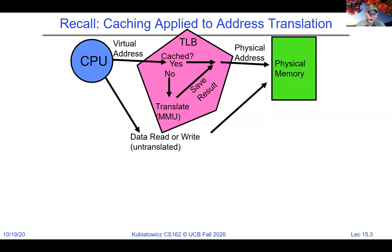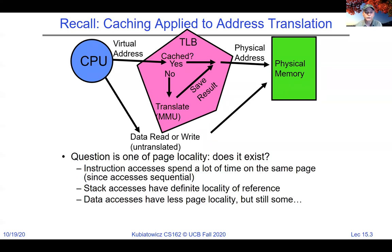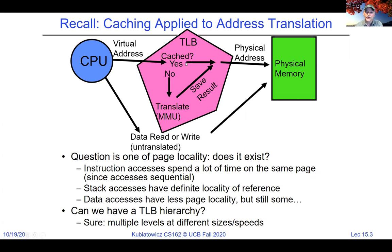When in kernel mode, the CPU can go around the TLB to look at things in physical pages. The question is whether there's enough page locality to make the TLB work. Instructions clearly have page locality, stack accesses have locality, and data accesses also have locality — though not always as good as instructions and stack. You can also have a hierarchy of TLBs, just as you can have a two-level cache. More on that later.